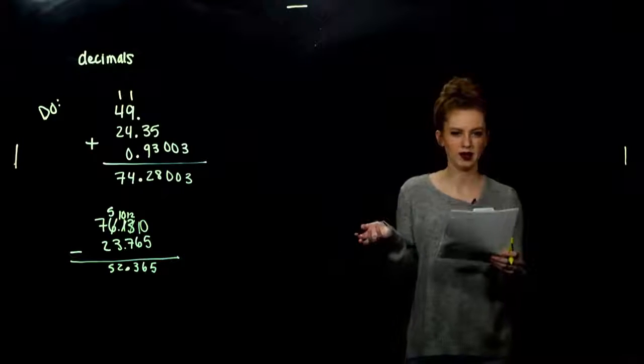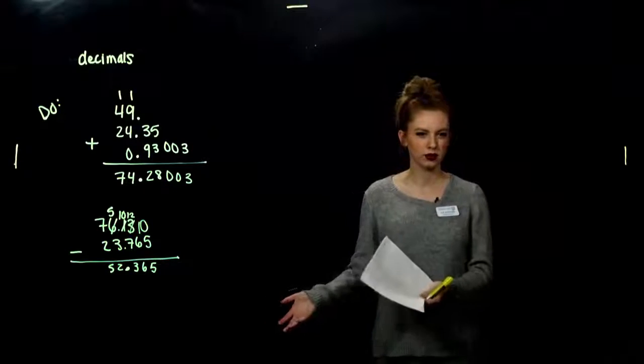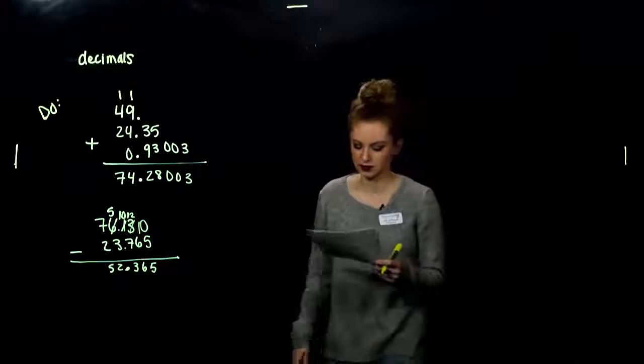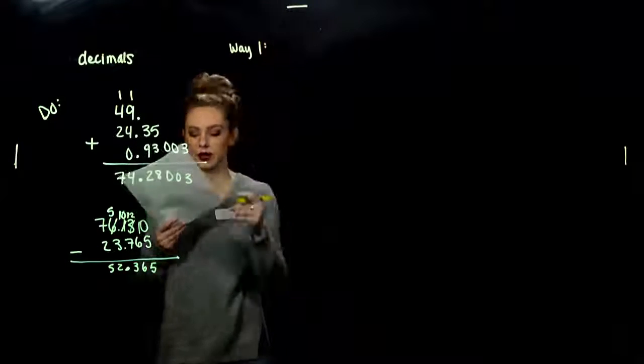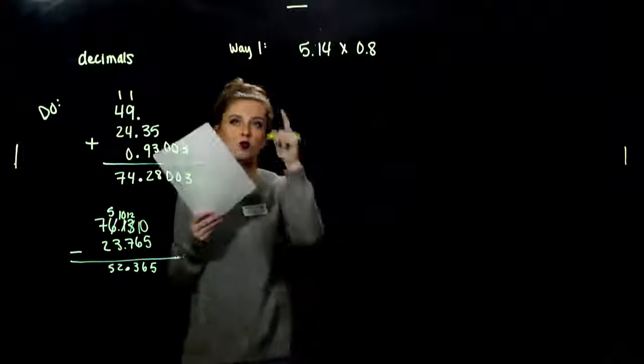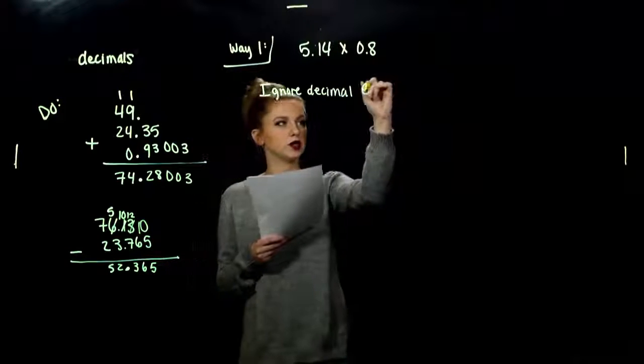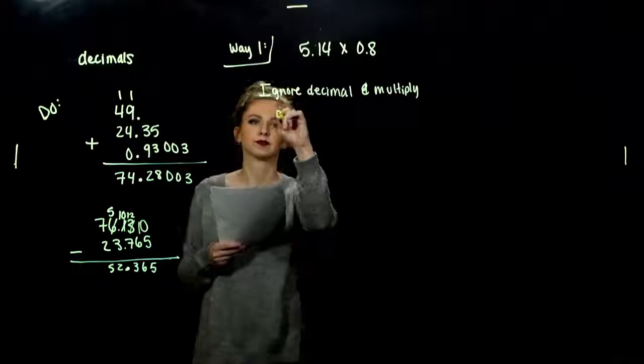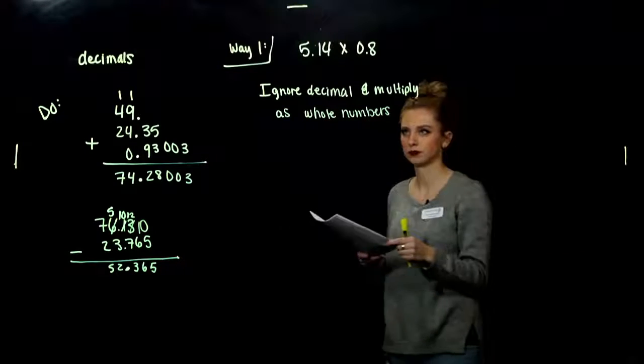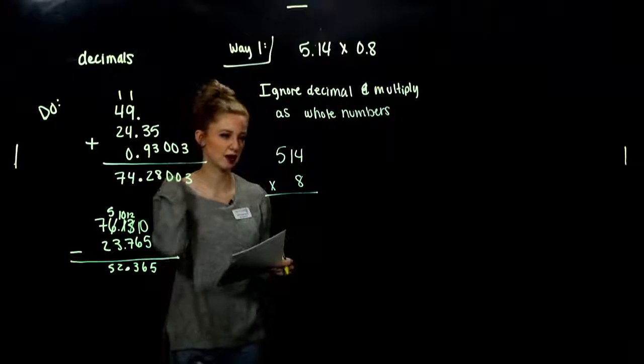Multiplication with decimal notation, you can do it in two different ways. I'll show you both, but in this class you can't have a calculator. So I feel like one is a lot more substantial for you to learn. The other way is kind of more calculator-based. I'm going to show you both ways anyway. Way number one. I'm multiplying 5.14 times 0.8. Way one, what are we doing? We ignore the decimal and multiply as whole numbers.